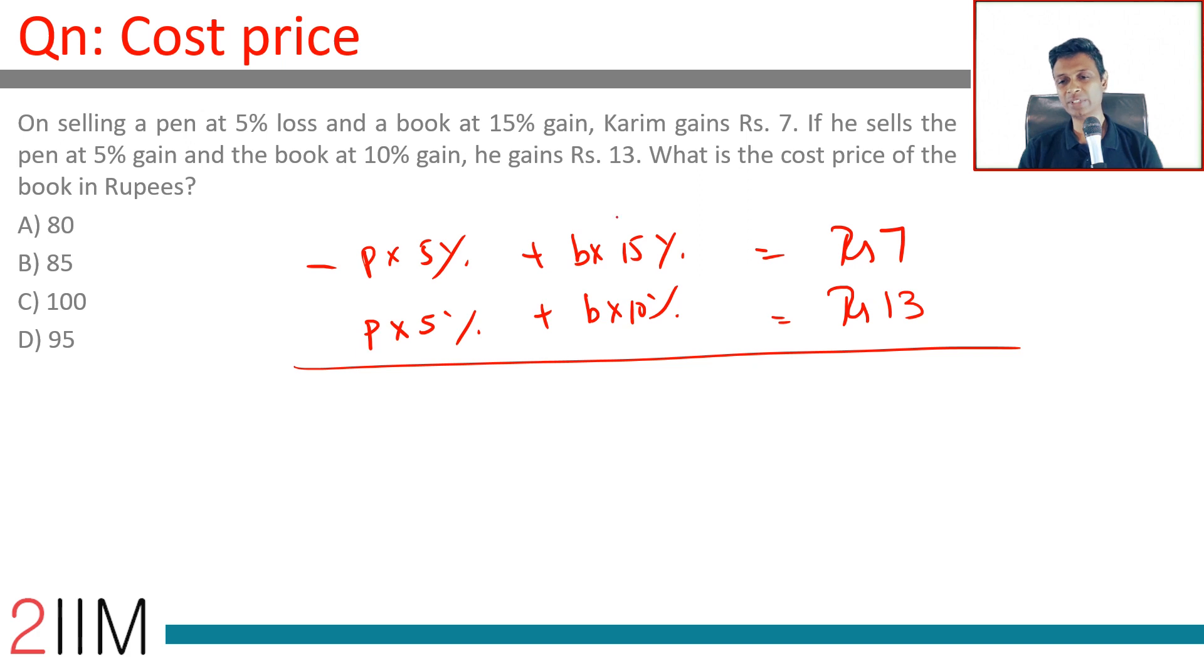Very simple question. Add these two equations. This completely disappears. Book into 25% is Rs. 20. Brilliant! So one-fourth of book price is 20, or the price of book is Rs. 80. So write the equation like this.